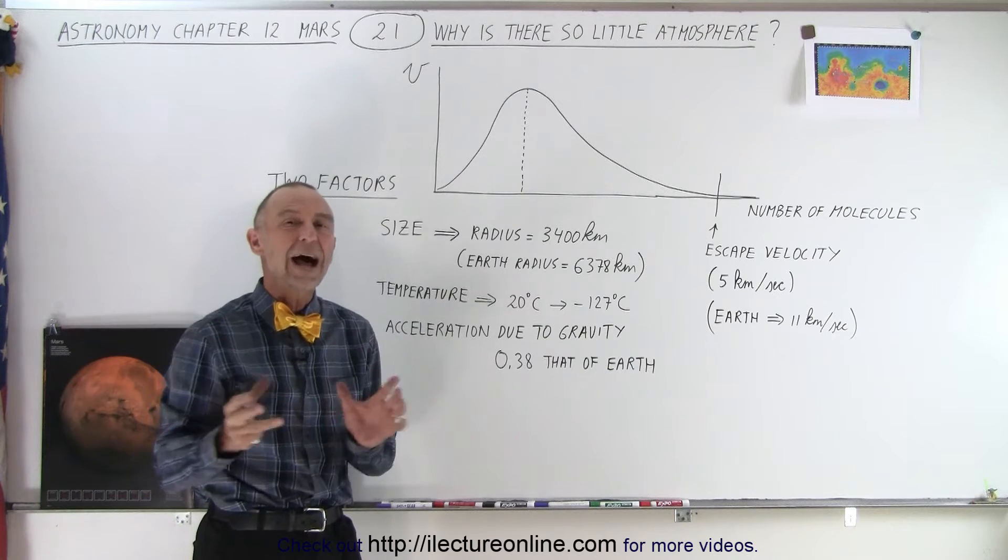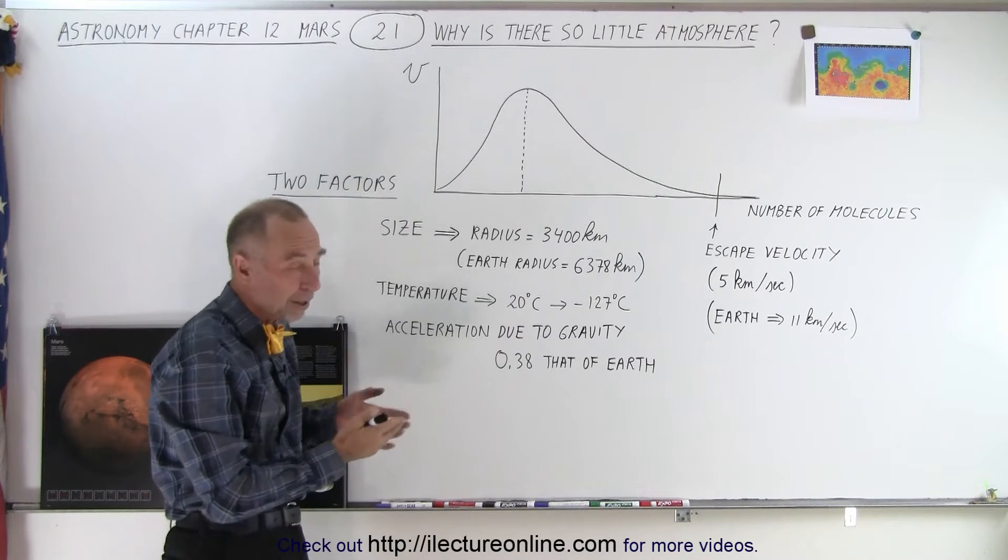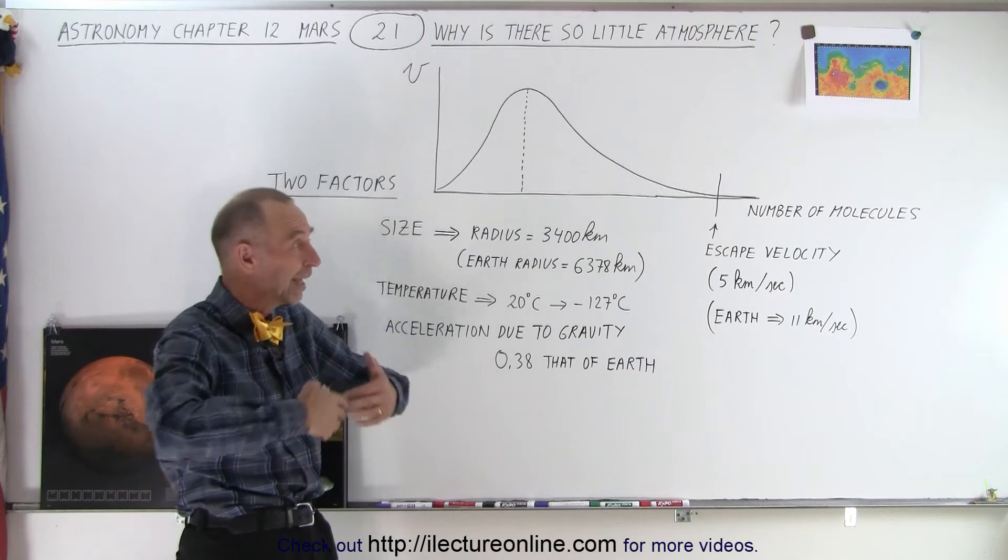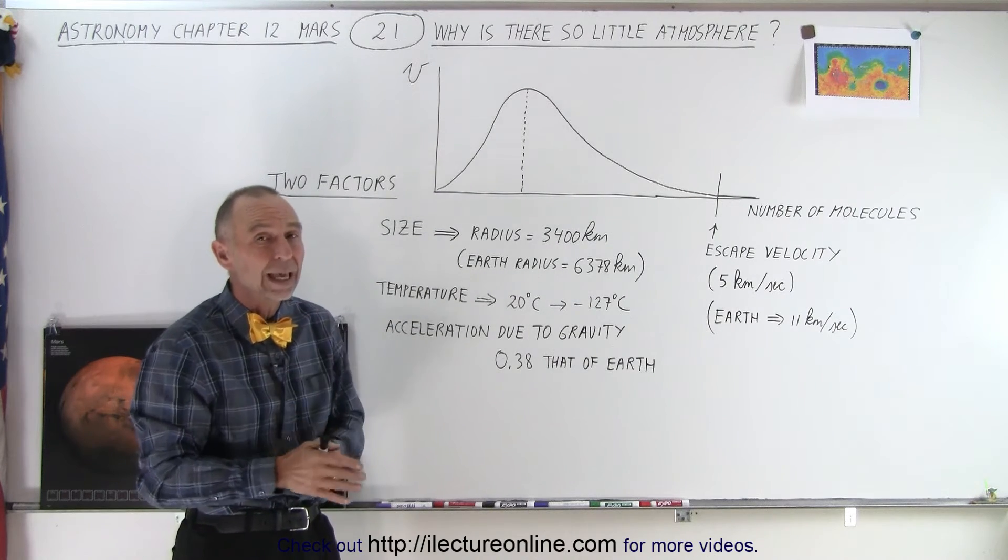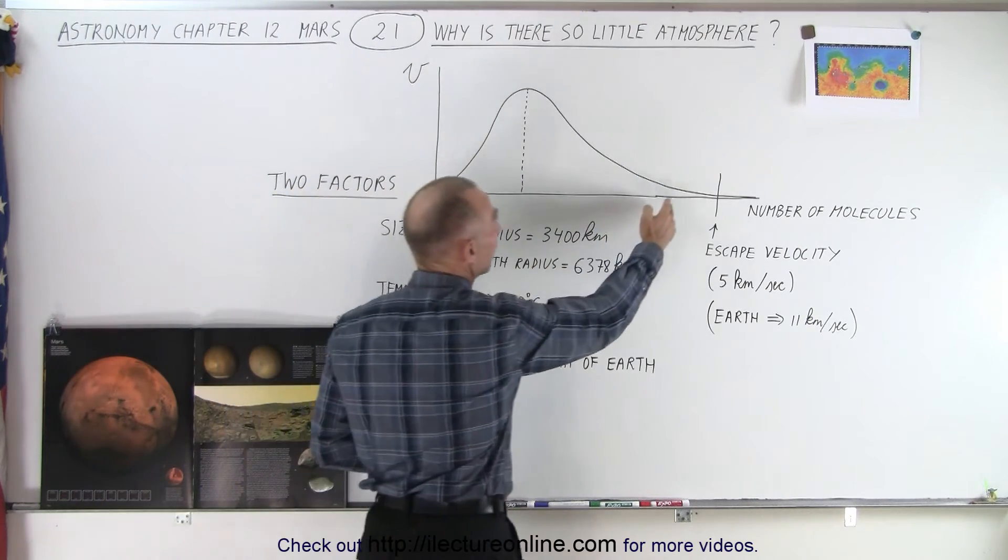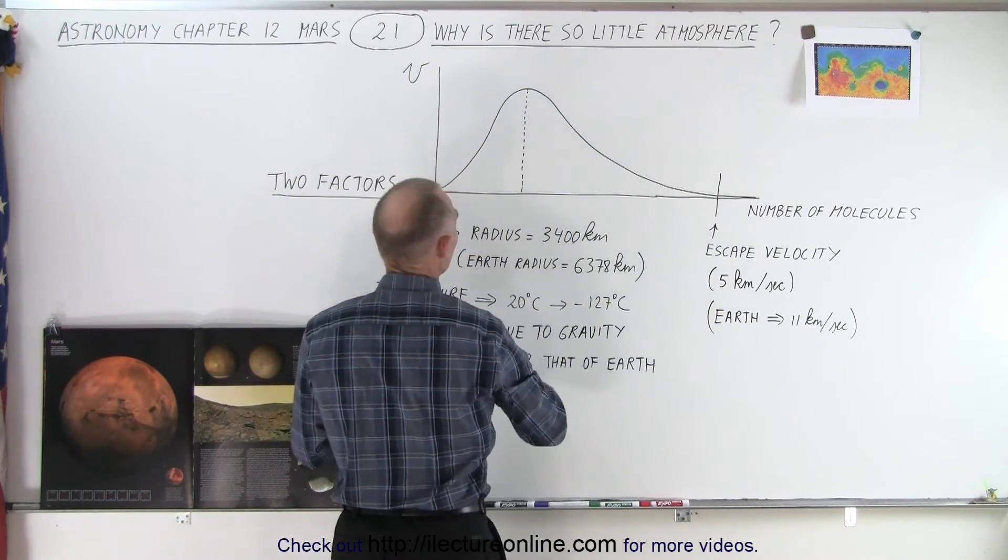And of course, it also has time on its side, because Mars has been around for about 4.5 billion years, so for the last 4.5 billion years this process has been ongoing, and over the millions and millions of years, there's an enormous span of time, very slowly the atmosphere leaked out.